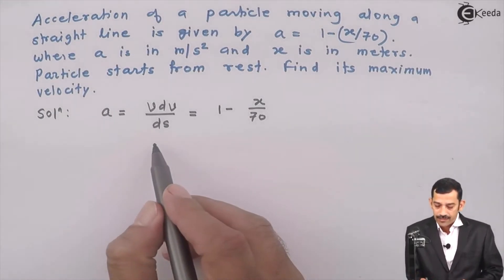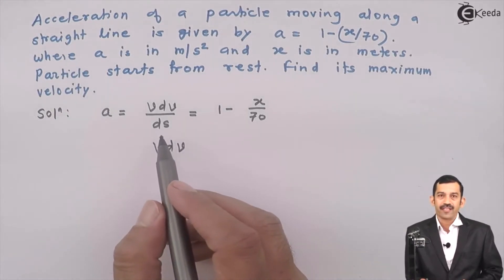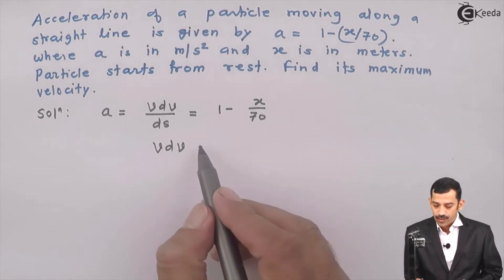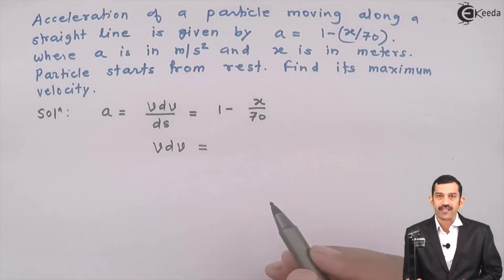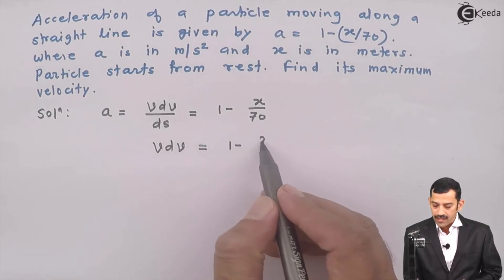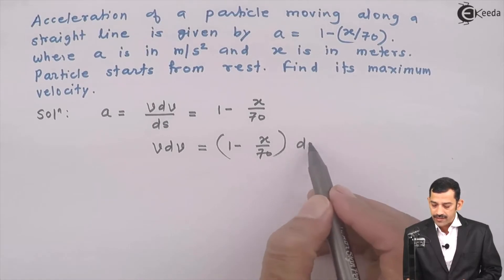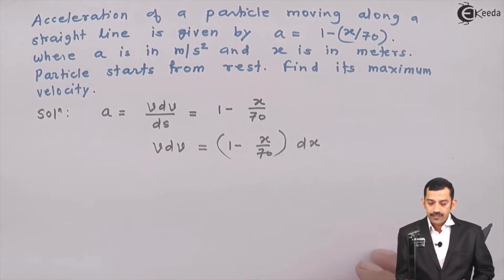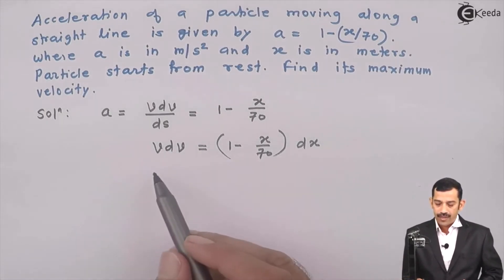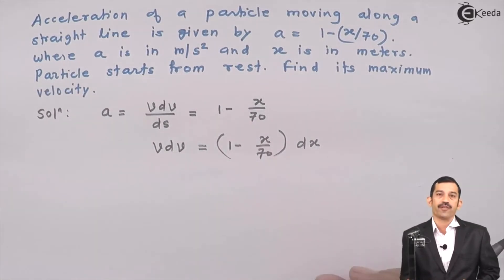If we integrate, we have v·dv/ds. Since small displacement ds can be written as dx, we substitute ds as dx. So the equation becomes v·dv = (1 - x/70)·dx. The limits of integration go from 0 to v on the left side. When velocity is 0, position is 0, as given in the problem — the particle starts from rest.